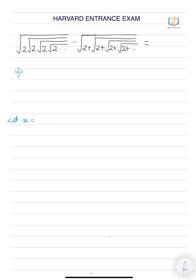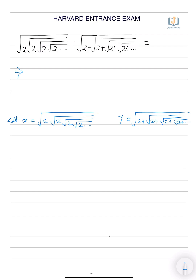Let x equal to under root 2, under root 2, under root 2... under root 2 plus, under root 2 plus, like that. So, we are squaring x. x squared is equal to 2 times under root 2, under root 2, under root 2 — and this is nothing but x. So, x squared equals 2x, which gives x equal to 2. We got x equal to 2.